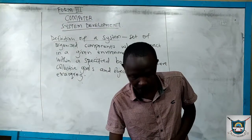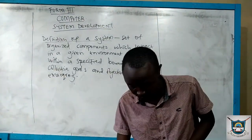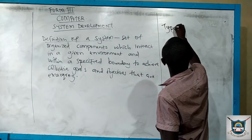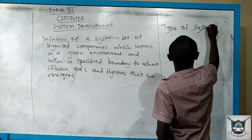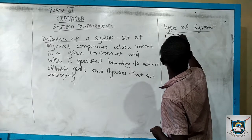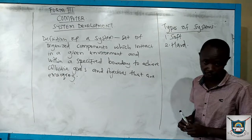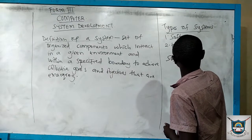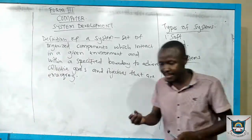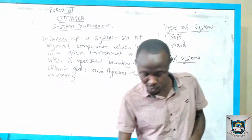Systems can be classified into two types. One is the soft system and the other one is the hard system. Now I move to the soft systems. This does not really mean the system is soft by touching — there is no sense of touch here. There are reasons why it is called a soft system.